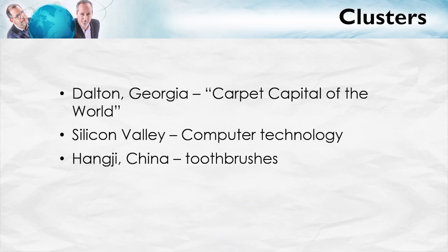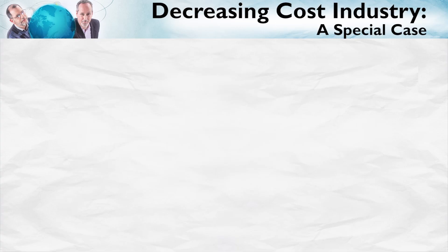Now, what is it about Hangji, China? Is there something special which makes this town just the ideal place in all the world to make toothbrushes? No, not at all. It's not like mining diamonds or gold — toothbrushes can be made anywhere. Is there anything really special about Dalton, Georgia which makes it the ideal place for making carpets? No. So why then do we see these industrial clusters?